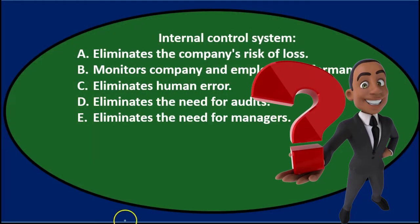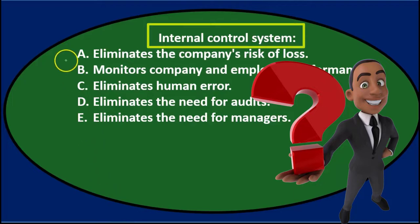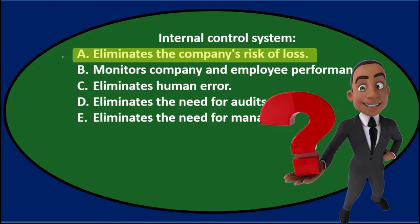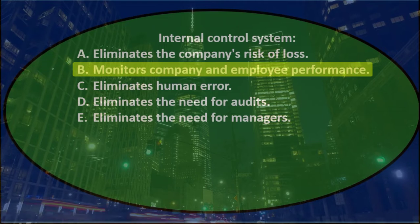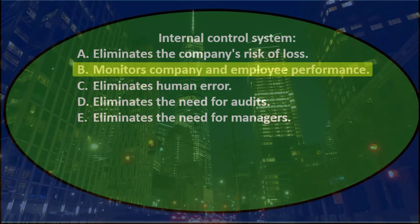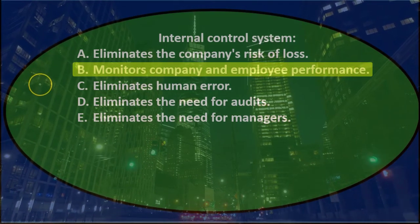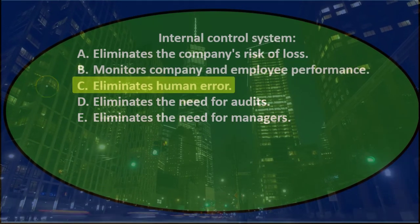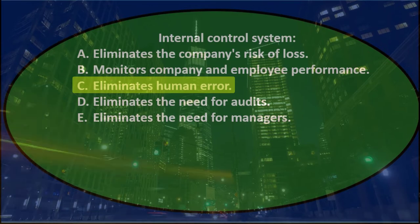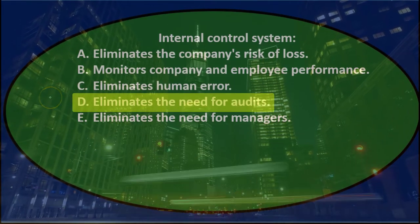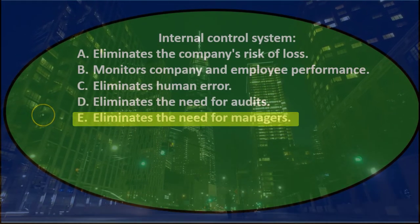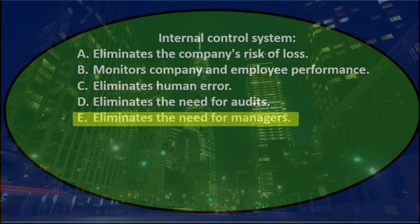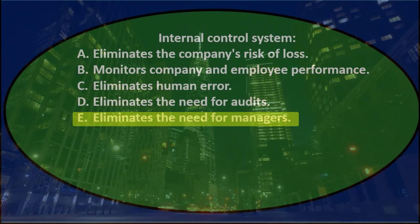Next question. Internal control system: A. Eliminates the company's risk of loss. B. Monitors company and employee performance. C. Eliminates human error. D. Eliminates the need for audits. Or E. Eliminates the need for managers.